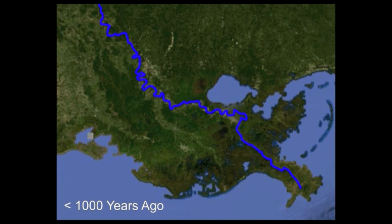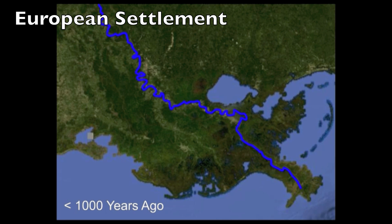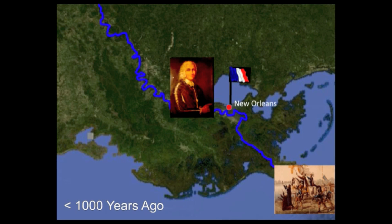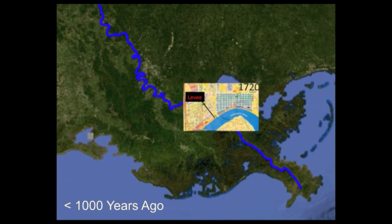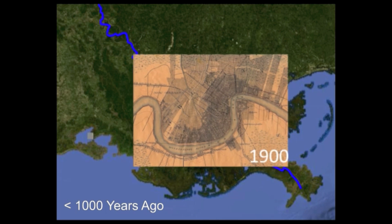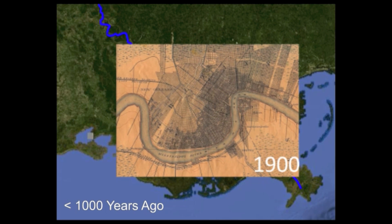The river periodically overflowed its banks each spring, delivering sediments to the coastal marshes and swamps. Then Europeans arrived and established New Orleans in a bend of the Mississippi River. To prevent flooding of New Orleans, levees were built and extended as the city grew.